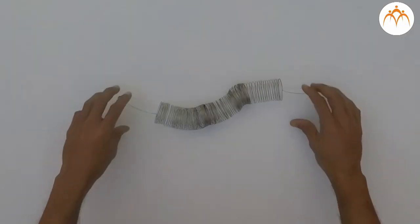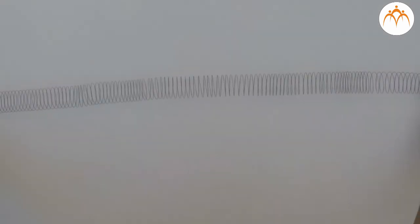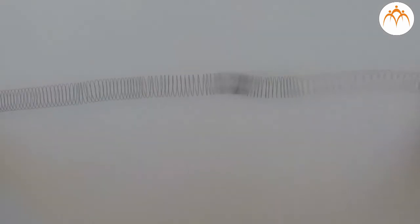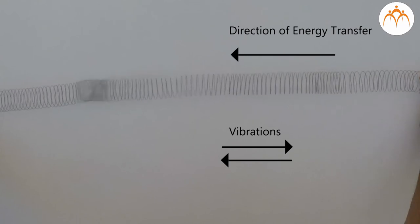A longitudinal wave can be created in a slinky. If the slinky is stretched out in a horizontal direction and the first coils of the slinky are vibrated horizontally. In such a case, each individual coil of the medium is set into vibrational motion in directions parallel to the direction that the energy is transported.